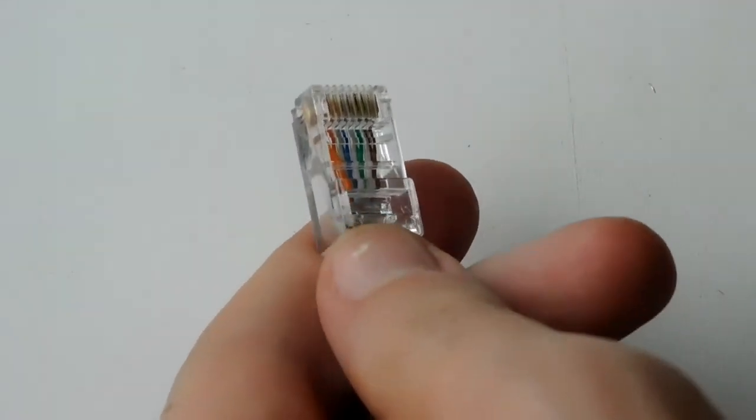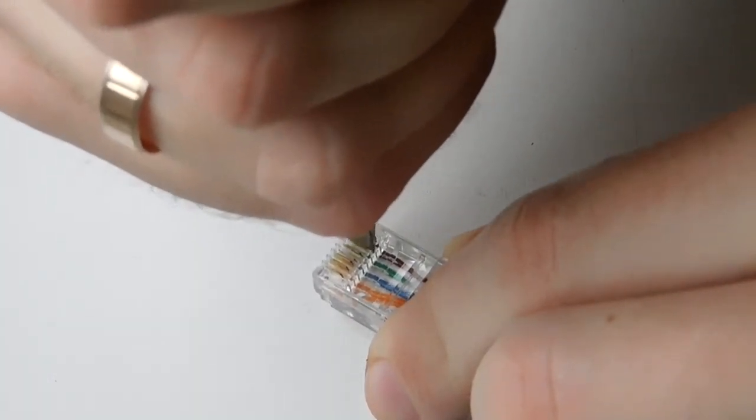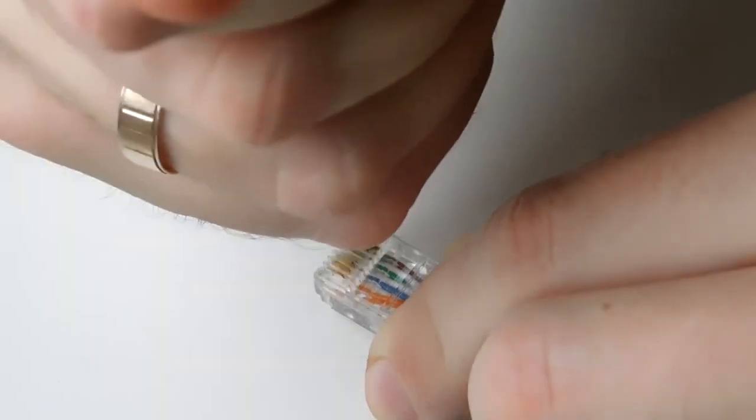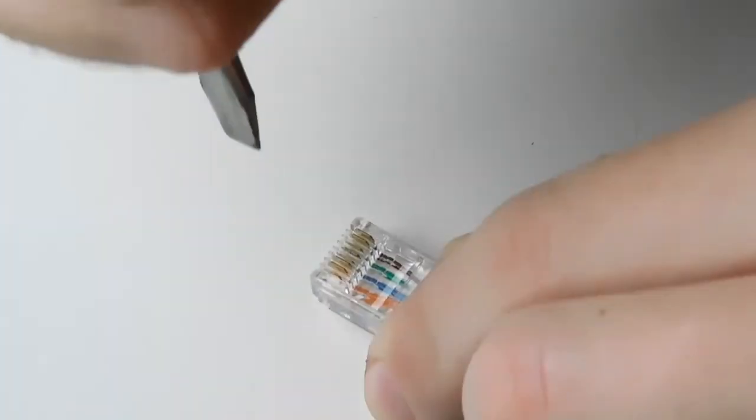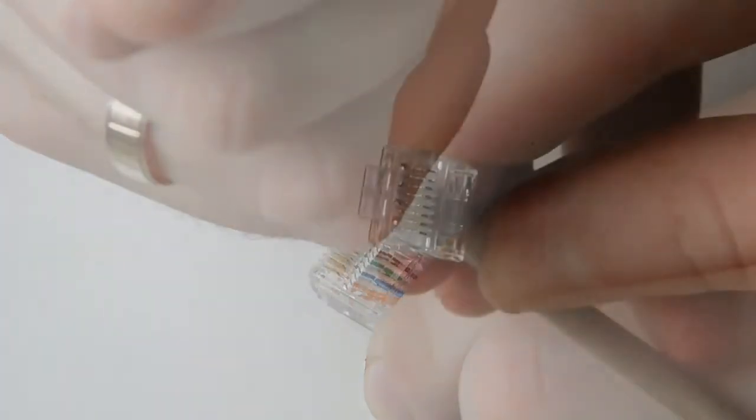And the last thing, crimp the contacts. With a screwdriver carefully press the metal plates. Plates get into the wire and make the contact. If you cannot do this, choose another screwdriver according to the size.